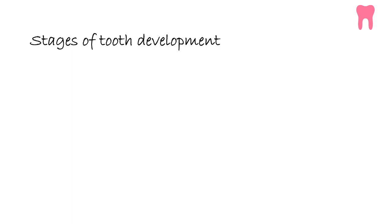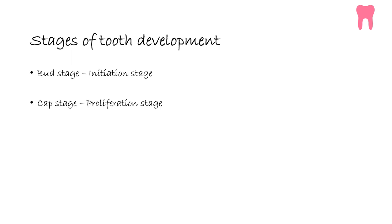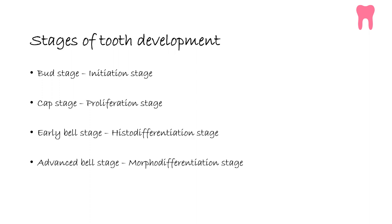The stages of tooth development can be described based on two things: the shape of the enamel organ and the histophysiological process the enamel organ undergoes. Based on that, the bud stage is called the initiation stage, the cap stage is called the proliferation stage, the early bell stage is called the histo-differentiation stage, and the late bell stage or advanced bell stage is called the morpho-differentiation stage.